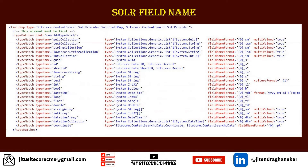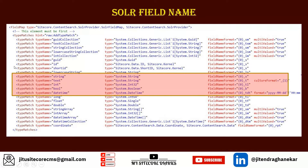These mappings between Sitecore and Solr fields are defined in the configuration file `Sitecore.ContentSearch.Solr.DefaultIndexConfiguration.config`. In that file you will see type matches. For example, type match for string maps to `System.String`, and the field name expression uses a placeholder `{0}` with the suffix `_s` for strings. Similarly, text uses `_t` and integer uses `_tl`.